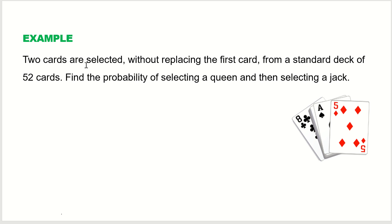Here is an example. Two cards are selected without replacing the first card from a standard deck of 52 cards. The key is 'without replacing the first card.' On the first draw you have 52 cards; after pulling one and not placing it back, you have 51 cards remaining for the second draw. Because the total number of cards changes, the probability on the second draw depends on the first — this is the dependent case.